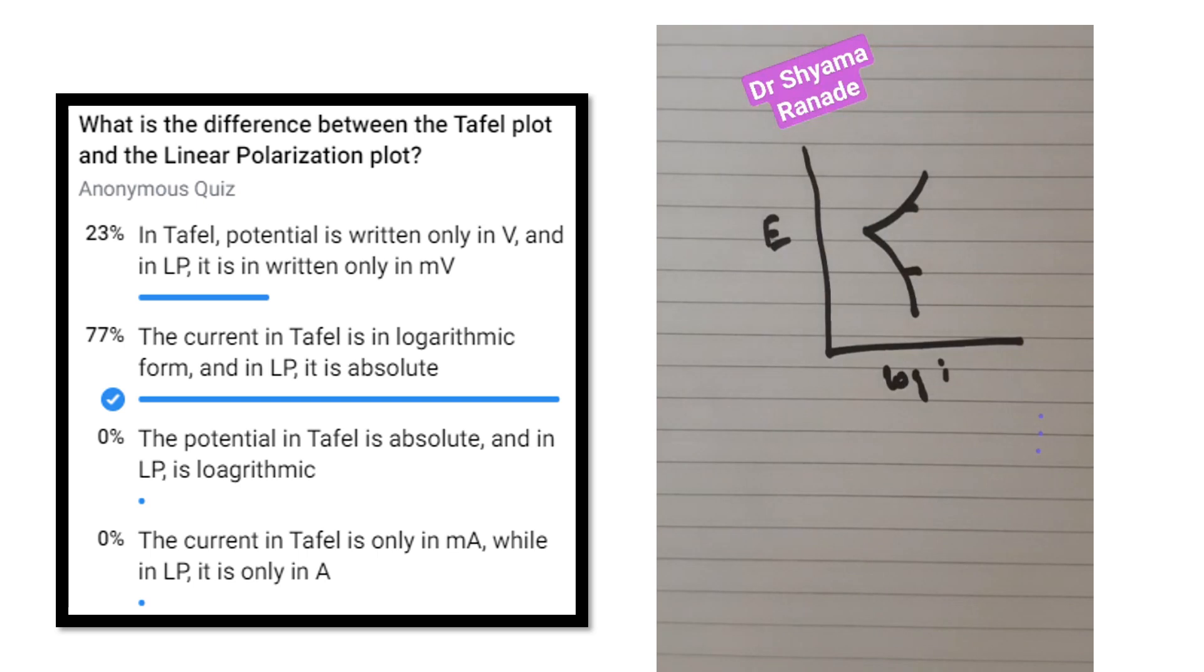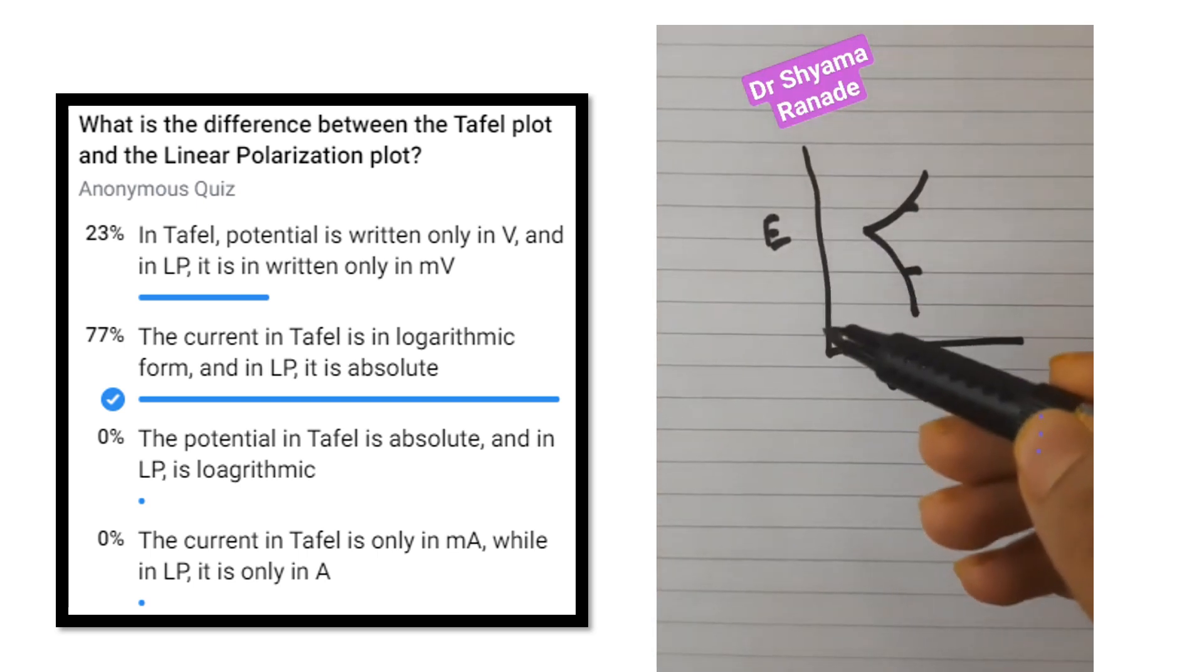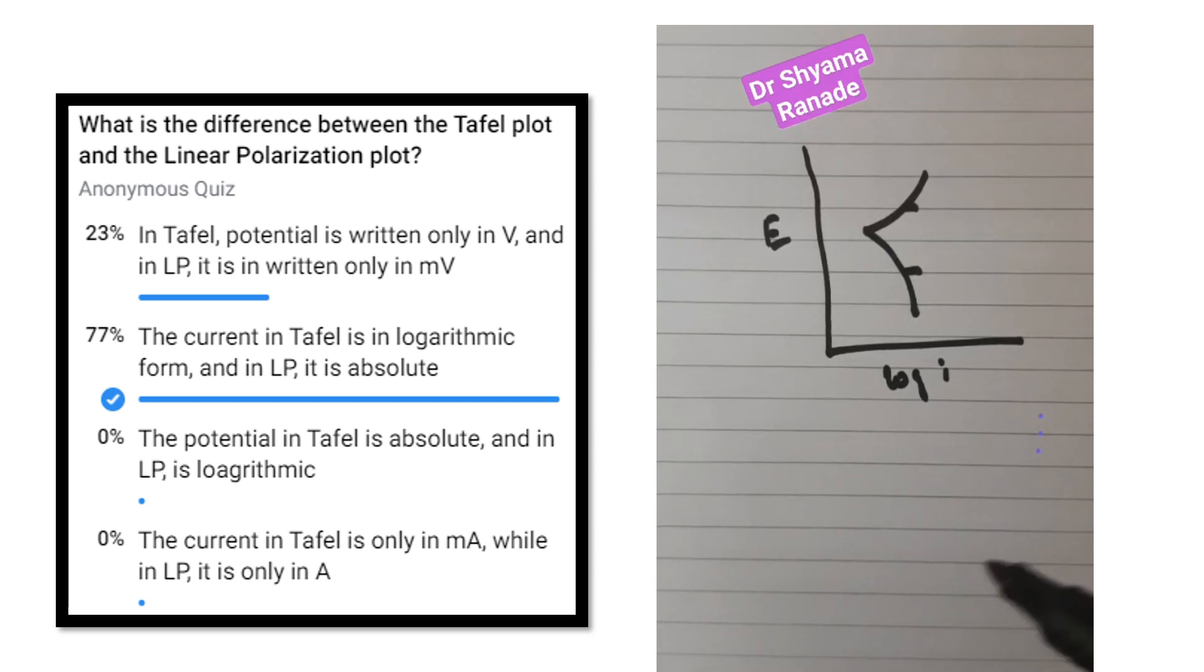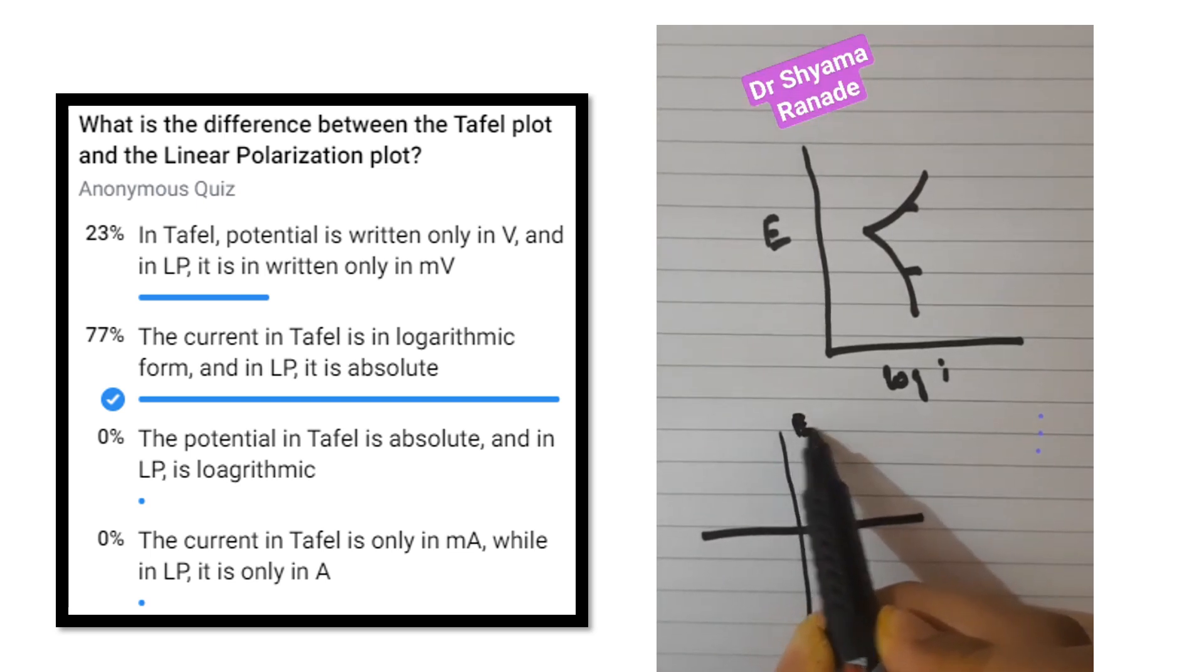The difference is in Tafel plot, the axes are potential versus logarithm of the current density. On the other hand, in the linear polarization, the plot is between the potential and the current density, but the absolute value.